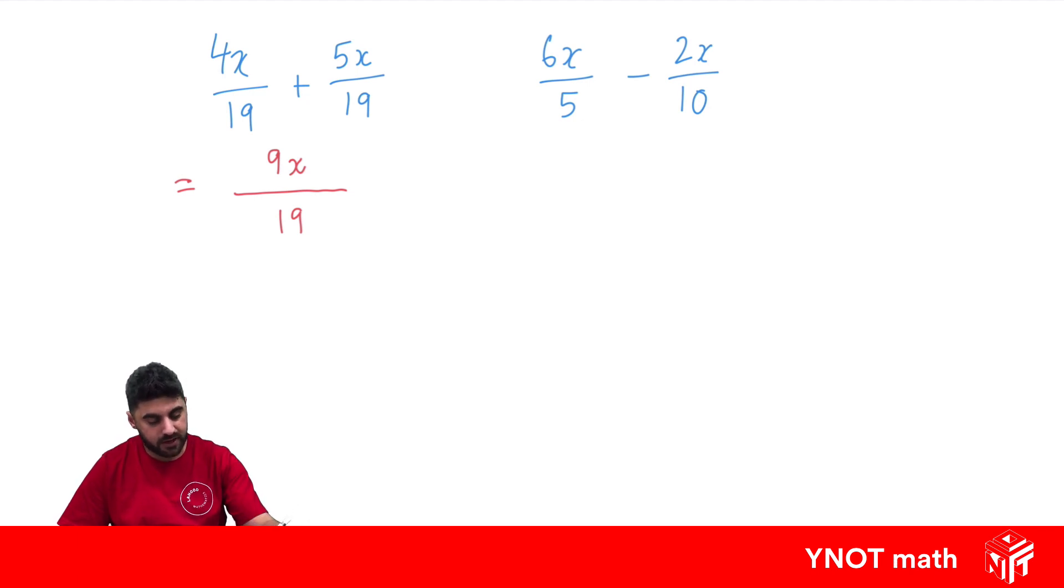So we need to make both the denominators equal to 10. One of them is already 10, so we don't have to do anything with that one. With the change of 5 into a 10, we times it by 2. What we do to the denominator, we do to the numerator. So 2 times 6x gives us 12x. 2 times 5 gives us 10. Minus our 2x over 10.